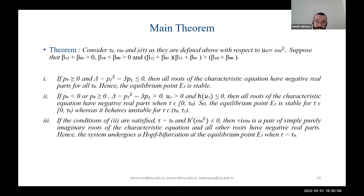I will directly mention the main theorem. We see that tau zero is our critical tau value for the equilibrium point. Supposing the Routh-Hurwitz conditions hold, the theorem has three parts: first, if two conditions hold, E3 is stable; second, if two further conditions are satisfied, E3 is stable for tau between zero and tau zero but may behave unstably for tau between tau zero and tau one; third, if these conditions hold, the dynamical system undergoes a Hopf bifurcation at E3 when tau equals the critical value tau zero.